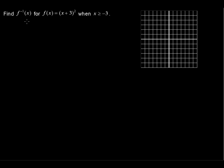Find the inverse of f(x) for f(x) equals (x+3)² when x is greater than or equal to negative 3. What I like to do when I'm finding the inverse is to graph the function. You don't necessarily need to graph it, but sometimes it makes it easier. This (x+3)² has a vertex at (0, -3), and I'll put a couple more points down just to help me sketch this.